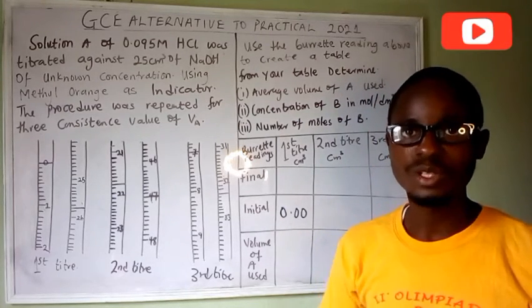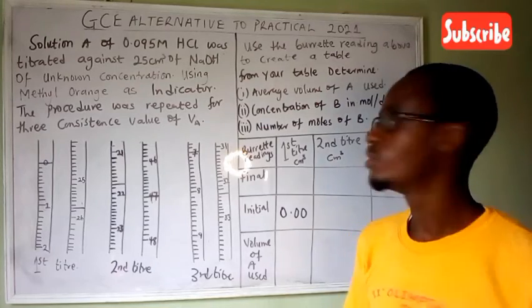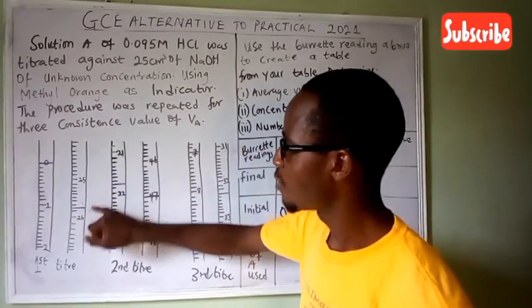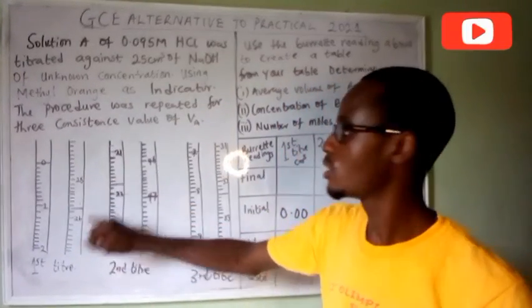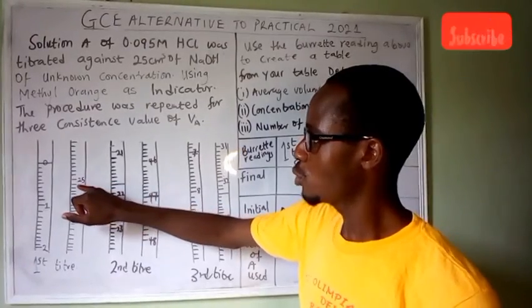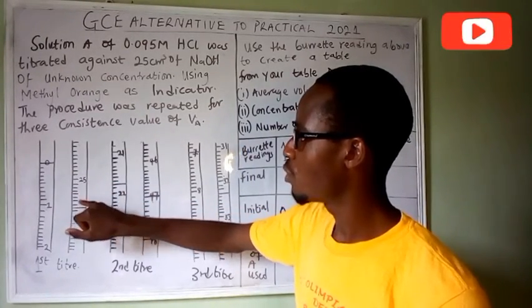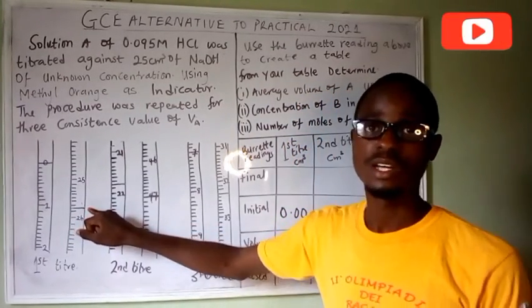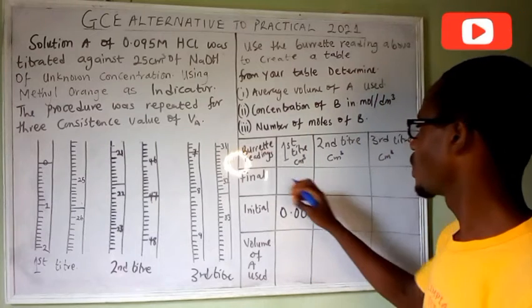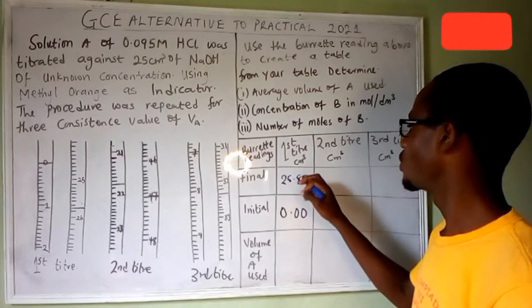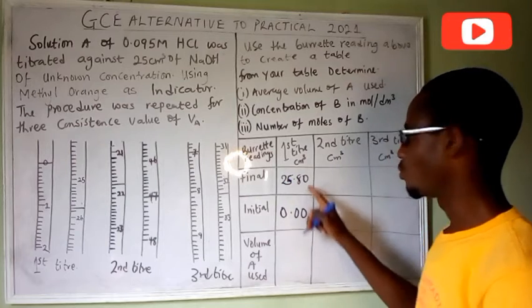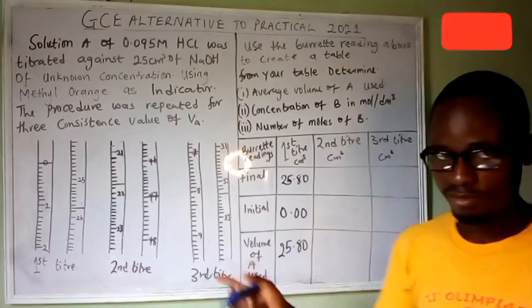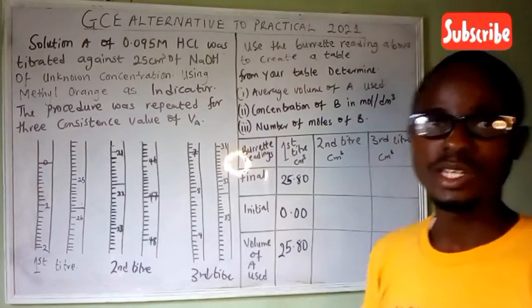The final reading: as we count going down from 25, we reach 25.1, 0.2, 0.3, 0.4, 0.5, 0.6, 0.7 - and this is 25.80. So we record this as 25.80. When you subtract the initial from the final you get 25.80. Now let's go to the second titration.